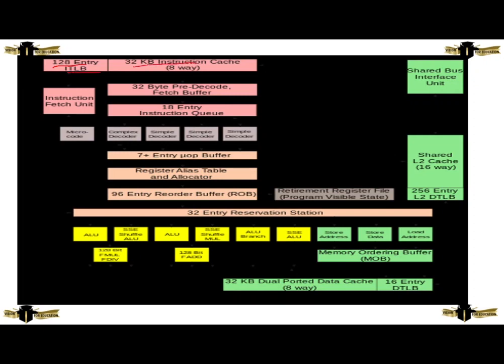The Intel Core i9 architecture consists of 128-entry ITLB, 32 KB instruction cache of 8 ways, instruction fetch unit, 32-bit pre-decoder fetch buffer, 18-entry instruction queue, micro-code, complex decoder, and simple decoders. It is connected to the 7-plus entry UOP buffer.